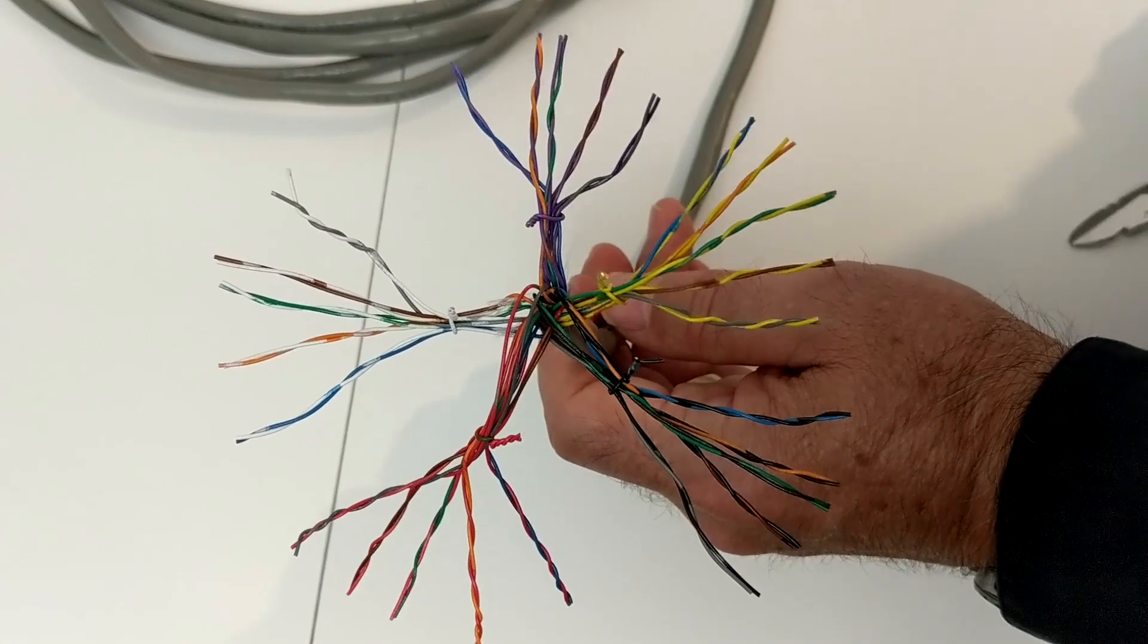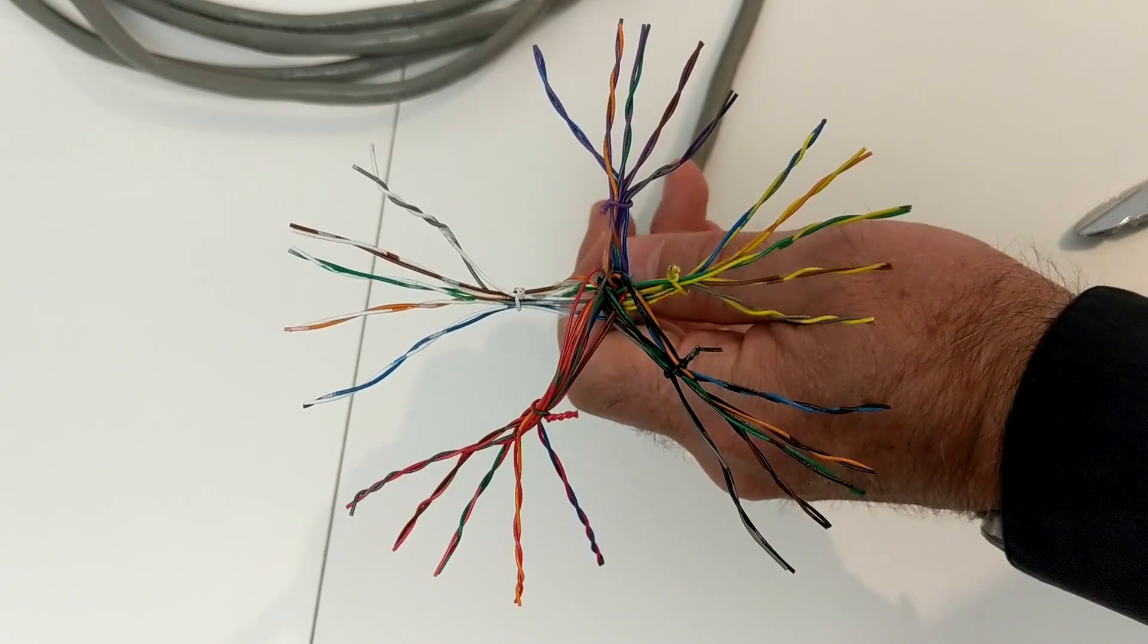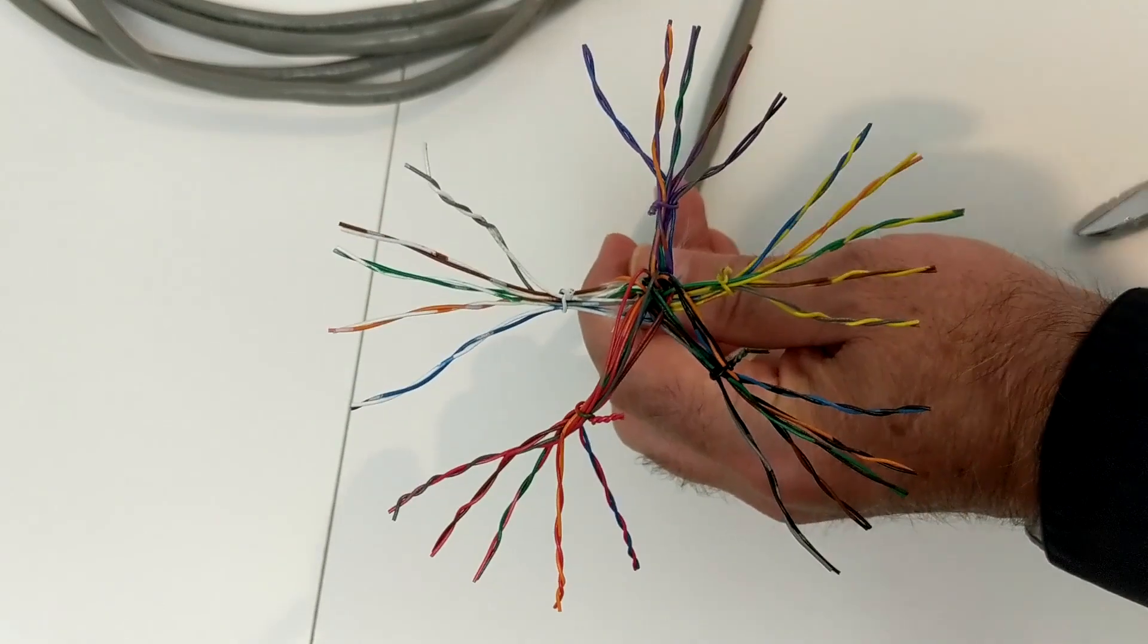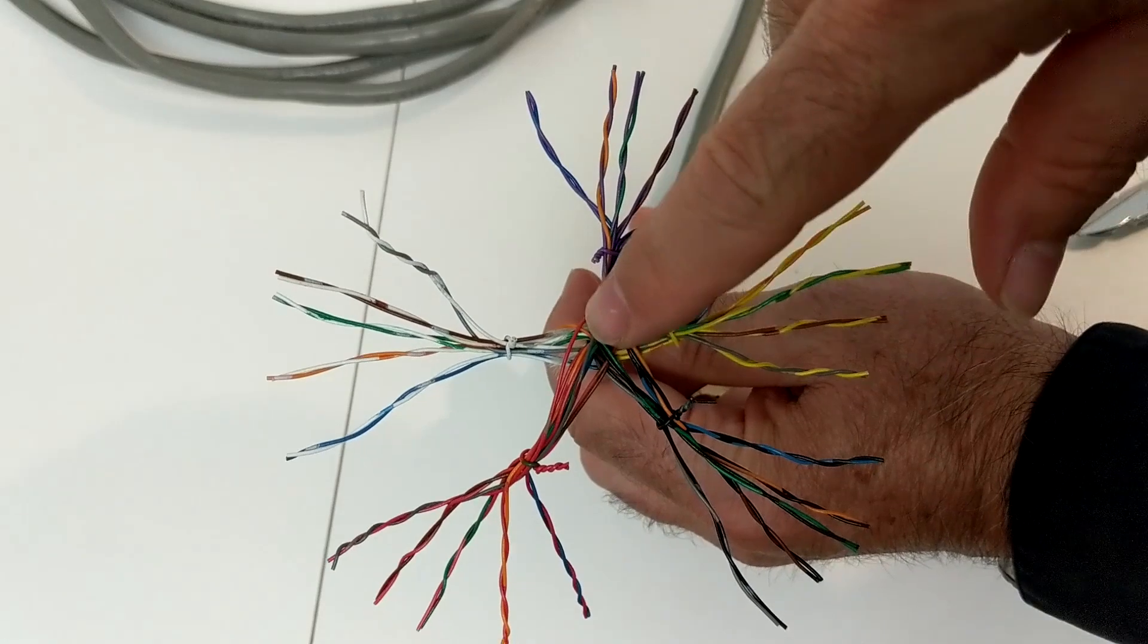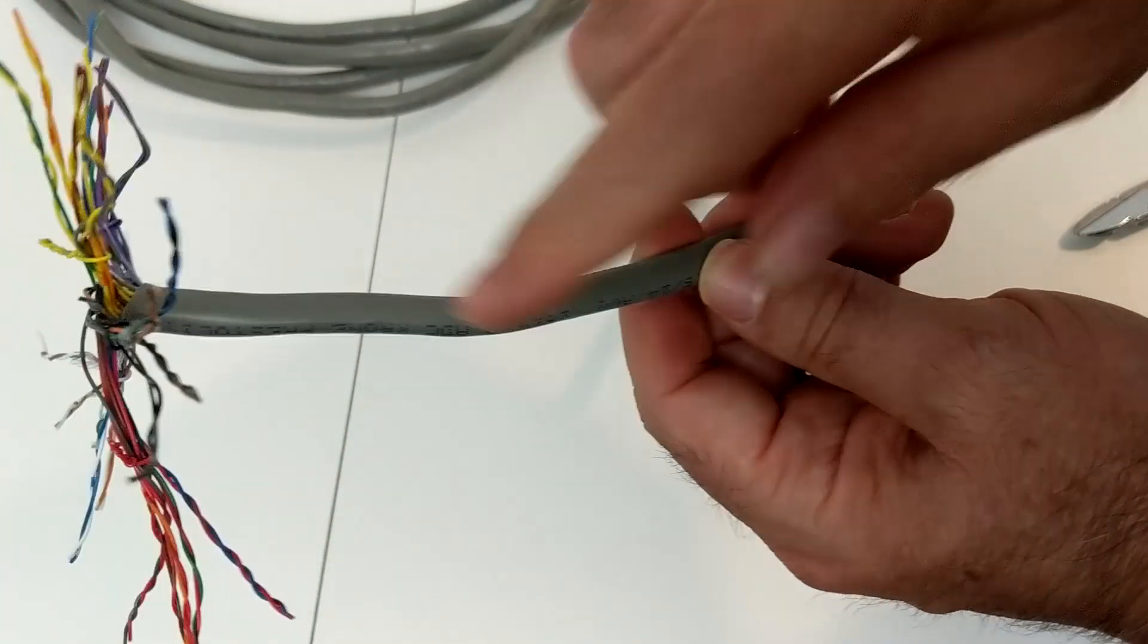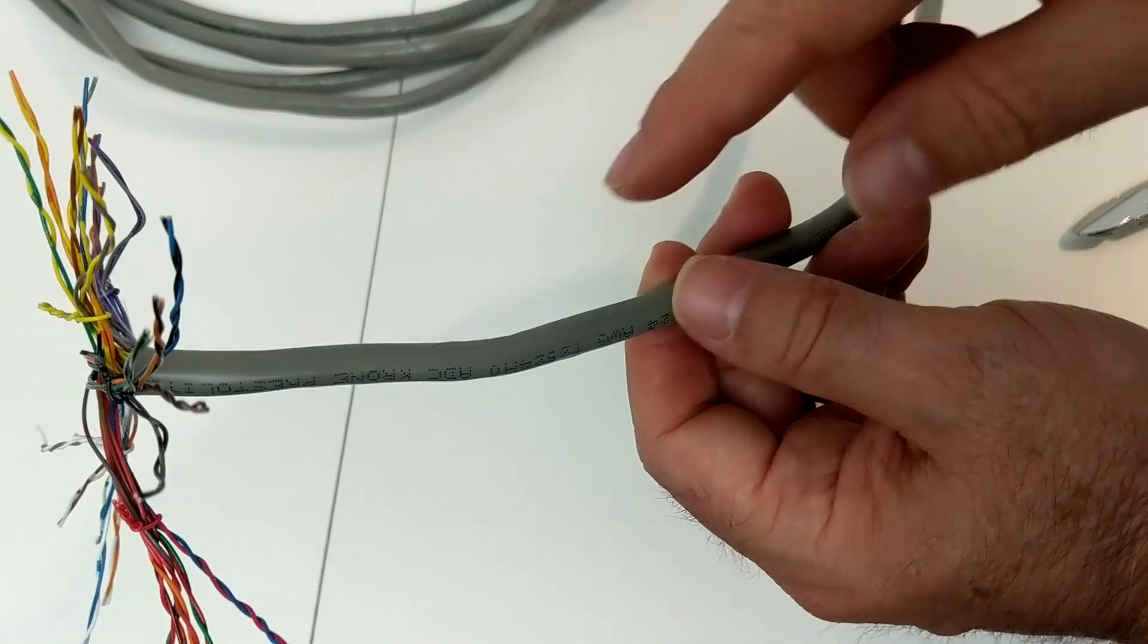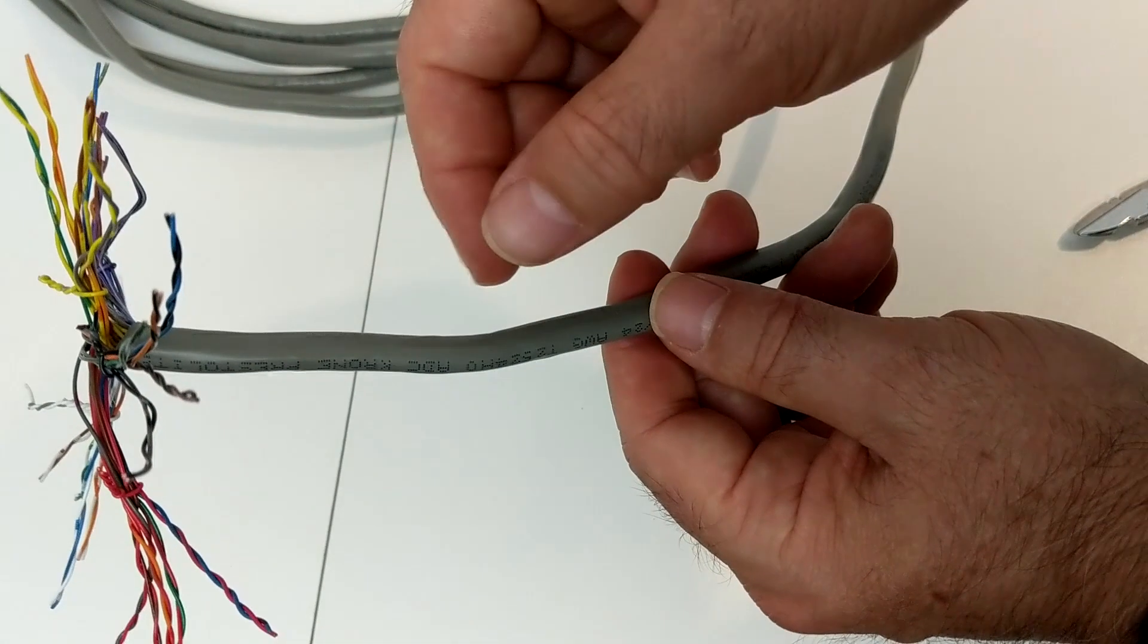So what they do is if you, say for instance, have a hundred pair cable, they'll put four sets of 25 pair in there. And then what they'll do is on the entire 25 pair—so imagine this, if this was stripped and you could see this all bare wire—they would wrap a colored ribbon around it, almost like dental floss.